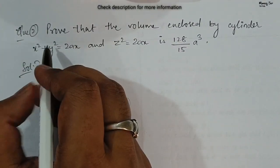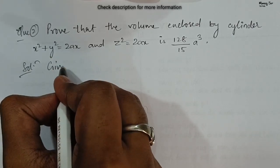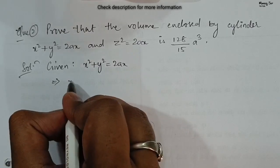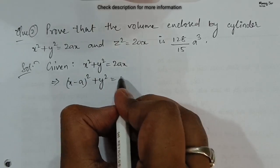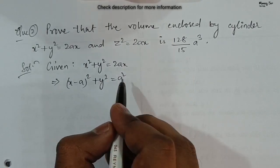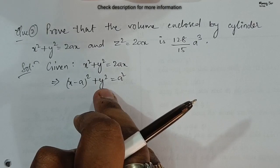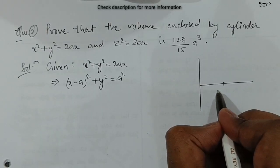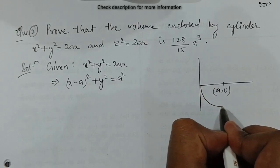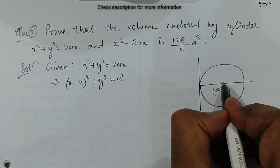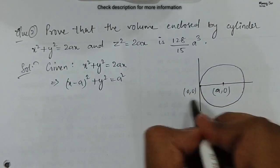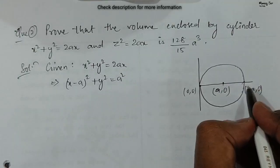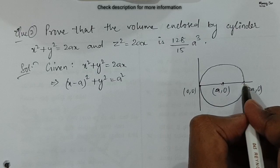The given equation x² + y² = 2ax can be rewritten as (x − a)² + y² = a². This is the equation of a circle whose centre is at (a, 0) and radius is a. So on the xy-plane, the centre is at (a, 0), and since the radius is a, the circle passes through (0, 0) and (2a, 0).